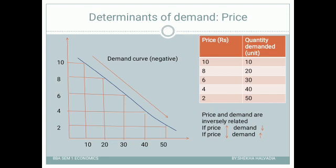Let us understand this with the help of a schedule and diagram. In the schedule, when the price is 10 the quantity demanded is 10; when the price reduced to 8 the quantity demanded increased to 30 units. You can continuously observe that as price declines, demand continuously increases, and vice versa. That is the inverse relationship between price and demand.